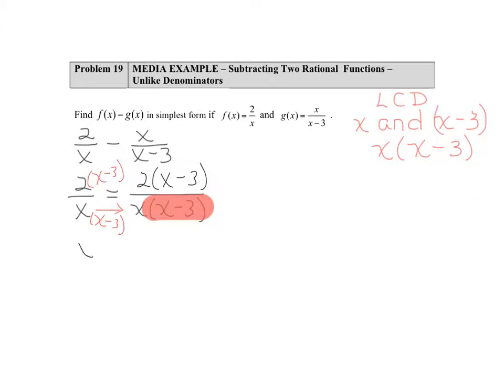Now we'll take our second fraction x divided by x minus 3 and do the same thing. Again the common denominator is x times x minus 3. We'll compare the denominator that we started with, and notice that what's new is the single x in front.